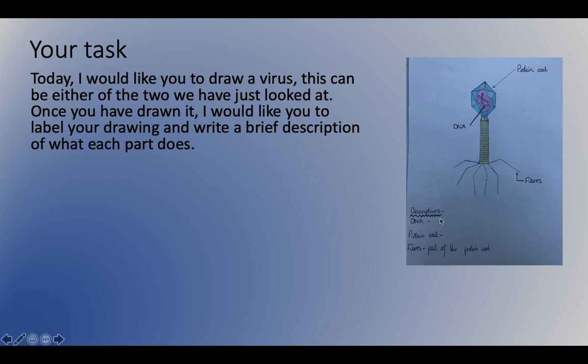I would like you to write a brief description of what each part does. For example, down here, I've got descriptions. I've not written a description for DNA and protein coat because you can go and find them yourself. There are going to be more there for you to write. I've just put fibers. I've given you a description there, so it's part of the protein coat. I would like you just to go off and have a go for me, please.